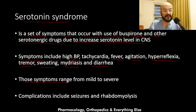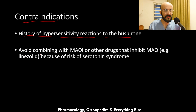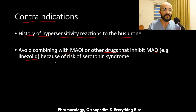Complications of serotonin syndrome include seizures and rhabdomyolysis. Regarding contraindications, they include a history of hypersensitivity reactions to the medication. It is also contraindicated to combine buspirone with monoamine oxidase inhibitors or other drugs that inhibit monoamine oxidase — for example, linezolid — because of the risk of serotonin syndrome.